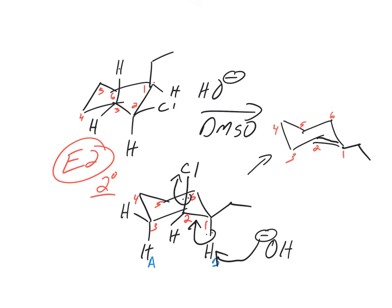So there's a product that also could look like this. Same thing. One, two, three, four, five, six. Yeah, just to reiterate, it has to be anti-periplanar, right? See how they're 180 degrees apart? So that one's axial up, one's axial down.